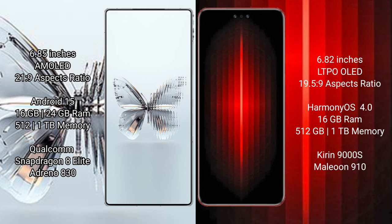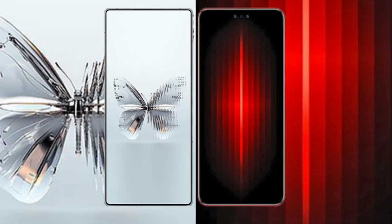The Red Magic 10 Pro Plus runs on Android 15, while the Huawei Mate 60 RS Ultimate runs on HarmonyOS. The Red Magic 10 Pro Plus comes with 16GB or 24GB RAM, 512GB or 1TB internal storage, Qualcomm Snapdragon 8 Elite processor, and Adreno 830 GPU. The Huawei Mate 60 RS Ultimate comes with 16GB RAM, 512GB or 1TB storage, Kirin 9000H processor, and GPU 910.